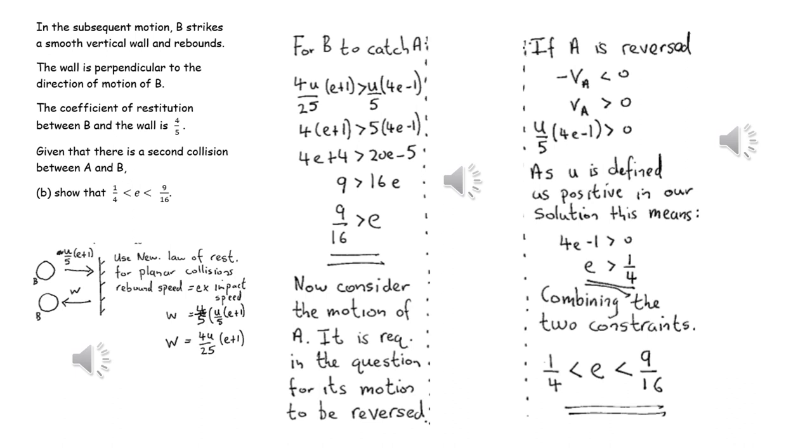To obtain the second part of the inequality involving e, we need to take into account that A reversed its direction after the first impact.